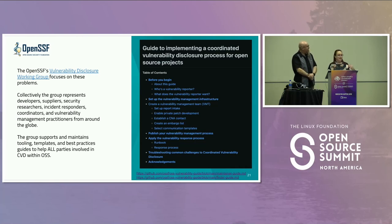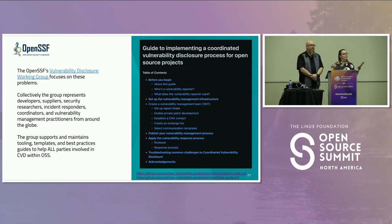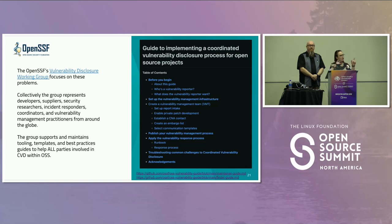In addition to the guide for maintainers, we've also recently released a guide for reporters. If you're a reporter who is commonly sharing vulnerability information with open source projects and want best practices on how to share this information, who to share it with, when to do it, what's expected of you, and what you can reasonably expect from them — we have a guide listing all of that as well. All of this is available on GitHub.